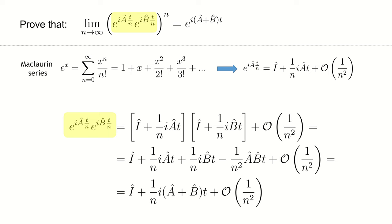Now we can calculate the product of two exponents. We open the brackets and again discard all the terms that grow faster than 1 divided by n squared.